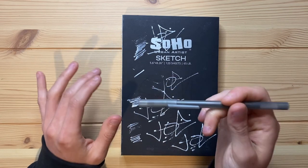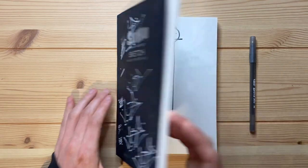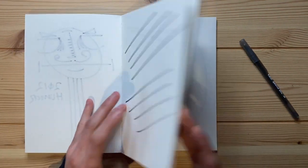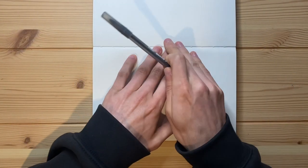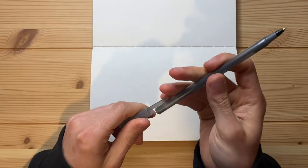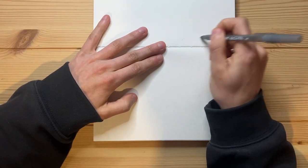I'm going to be drawing in my Soho Urban Artist sketchbook in today's video. Without further ado, let's flip to a brand new page. I'm going to start drawing on this piece of paper right here. First I should probably get the cap off and do a little bit of a doodle.